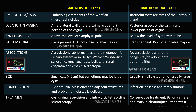Gartner duct cysts are typically located in the upper fornix of the vagina, in the anterolateral wall, whereas Bartholin duct cysts are located in the posterior aspect of the vagina in the lower portion. On coronal imaging, Gartner duct cysts are located above the level of the symphysis pubis, and Bartholin duct cysts are located below. On transperineal ultrasound, Gartner duct cysts are not closely related to the labia majora, whereas Bartholin duct cysts are closely related to the labia majora.